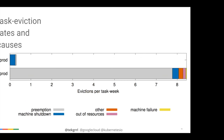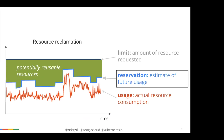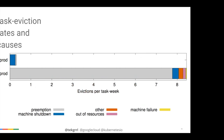Looking at reasons why tasks get evicted from a machine within a cell: for production workloads, the eviction rate is very low, and most evictions are scheduled machine shutdowns for maintenance. Sometimes lower-priority production tasks get preempted, but it's very rare. For non-production workloads, there is a significant amount of preemption, because they're running in the spare capacity that may be needed by actual production workloads.